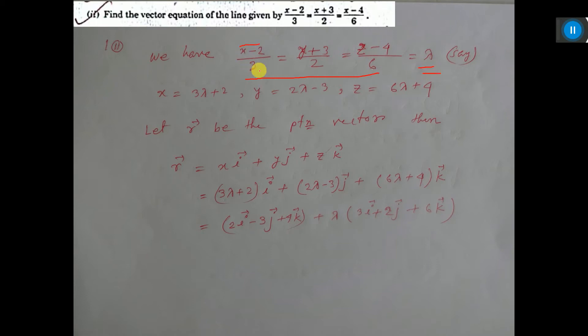So x minus 2 equals 3 lambda, so x equals 3 lambda plus 2. That is written here. Similarly, y plus 3 equals 2 lambda, and y equals 2 lambda minus 3. That is written here.